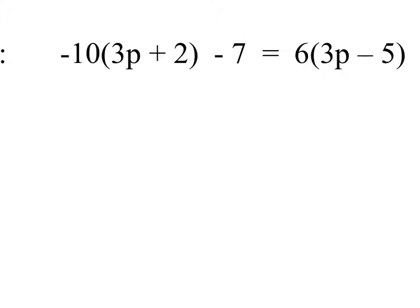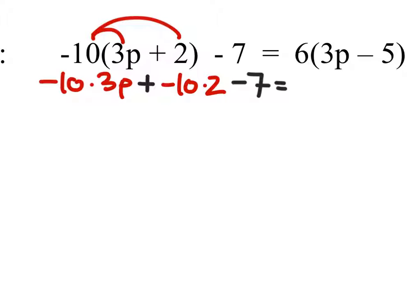So on this first part I'm just going to distribute the negative 10. I have to take that negative 10 and multiply it by the 3p and the 2 as well. Then I'll subtract the 7. This all equals, I must distribute the 6 as well on the right side of the equal sign, and I would have 6 times 3p minus 6 times 5.